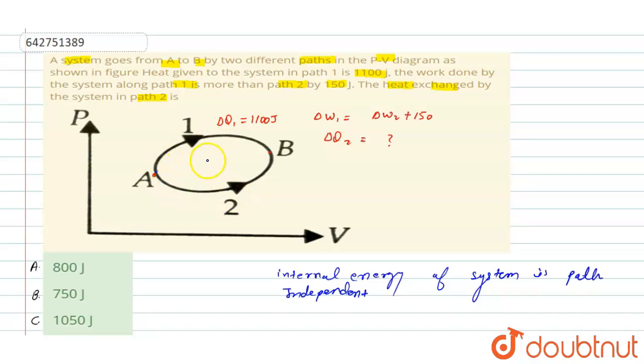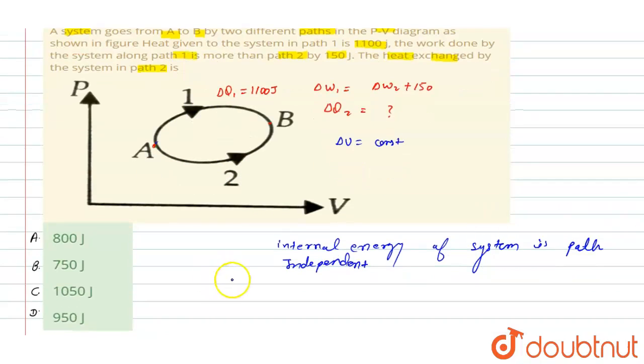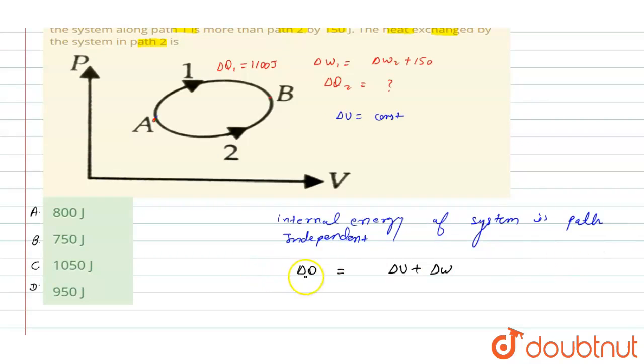Second thing we know from energy conservation, that del Q, means change in heat energy, is equal to del U plus del W. Now we can apply this for path 1, so we can write here that del Q1 equals del U plus del W1.